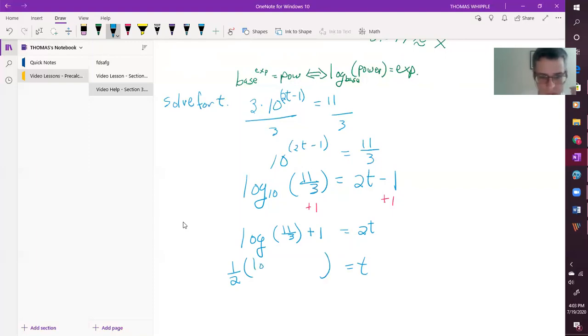So it's going to be one half times the log of 11 thirds. And then we have plus one half. And we can go to our calculator now and see what that would approximately equal to.